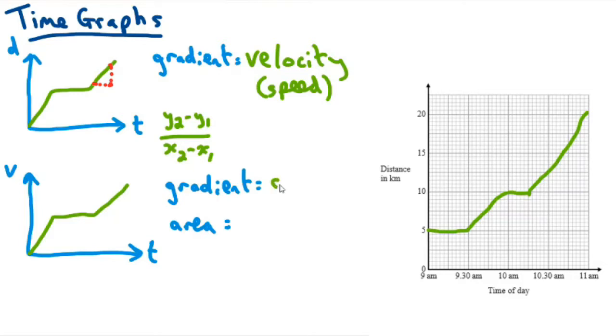So, yeah, gradient is acceleration. Now, though, we can also make use of the area under the graph. The area under here is going to be your distance.